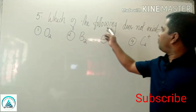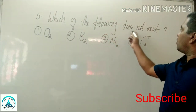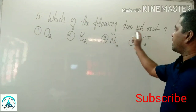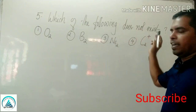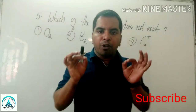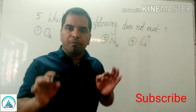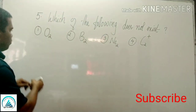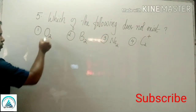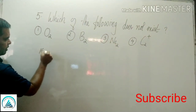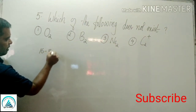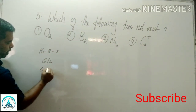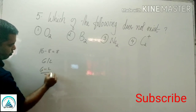Next question: which of the following does not exist? If the bond order of a molecule is 0, the molecule does not exist. O2: total number of electrons 16. 16 minus 8 = 8 remaining. Bond order = (6 minus 2) divided by 2 = 2.